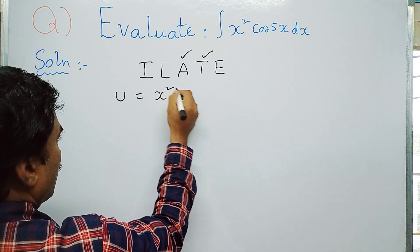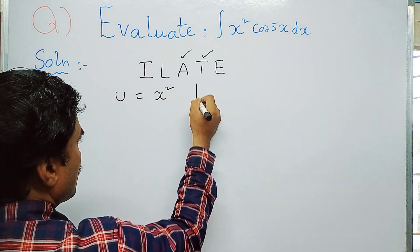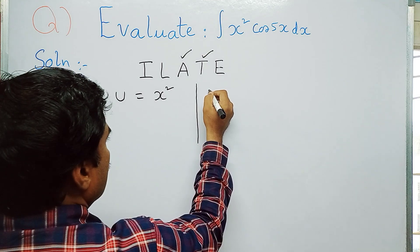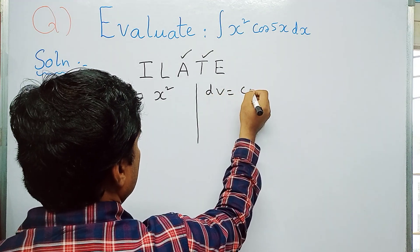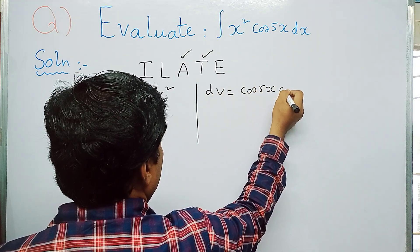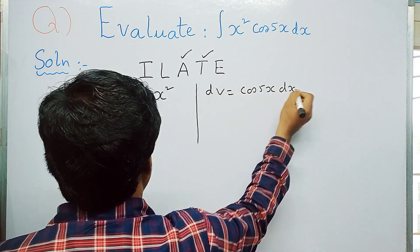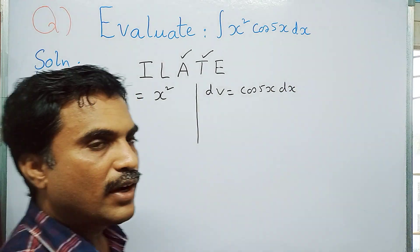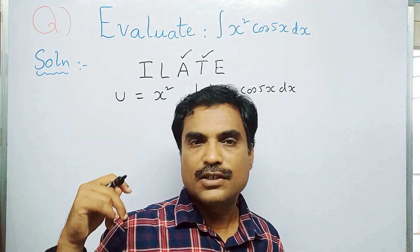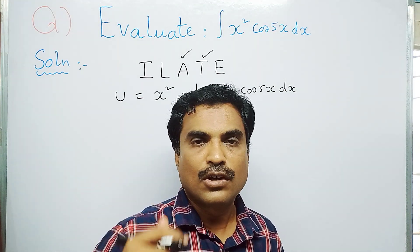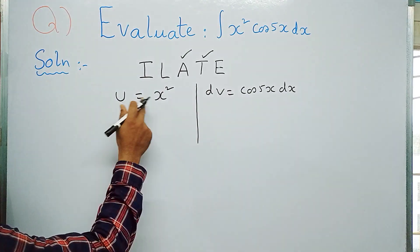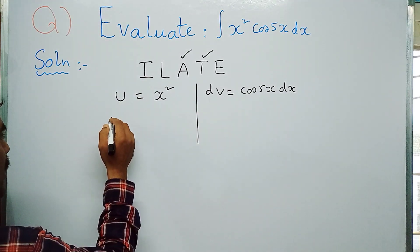So u is taken as x² and the other function is taken as dv, so dv = cos 5x dx. On the left-hand side we differentiate u until a constant arrives.